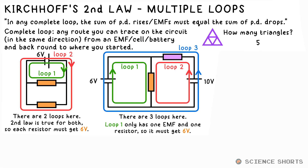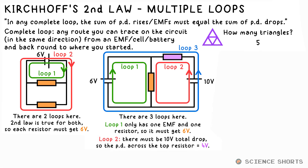Does that help us figure anything else out? Yes — look at loop two. The EMF is 10 volts, and we know what the PD across one of the resistors is, so that means the PD across the other must be 4 volts. We've got everything now, but let's have a look at loop three as well. The batteries are opposing each other, so the total EMF in this loop is 10 minus 6 — that's 4 volts. And there's only one resistor that can take up that PD — so look at that, it all checks out.